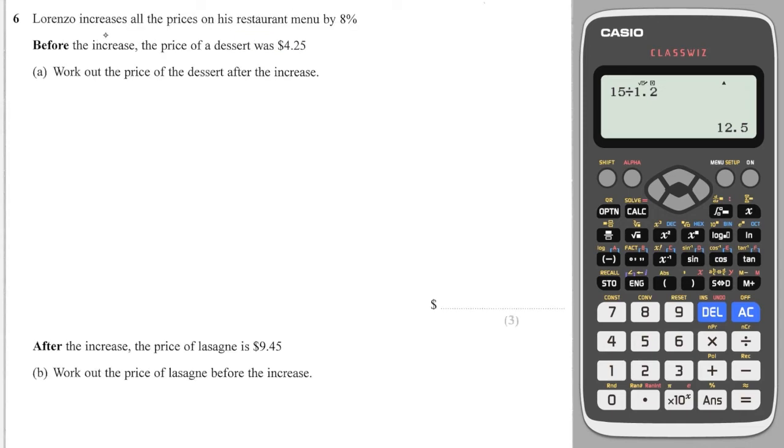Okay, Lorenzo increases all the prices in his restaurant by 8%. Before the increase, the price of dessert was $4.25. Work out the price of the dessert after the increase. I do 4.25 multiplied by an 8% increase, which is times it by 1.08, and this gives me $4.59.